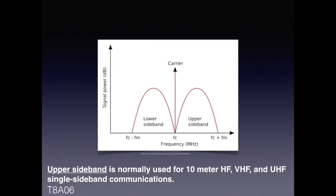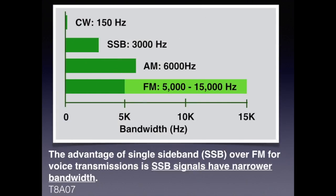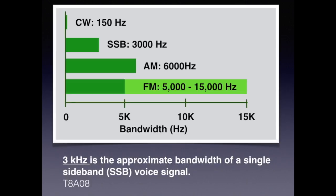As a general rule, lower sideband is used below 9 megahertz, and upper sideband is used at 9 megahertz and above, starting around the 30 meter band. For the exam, know that upper sideband is normally used for 10 meter HF, VHF, and UHF single sideband communications. The advantage of single sideband over FM for voice transmission is that single sideband has a narrower bandwidth.